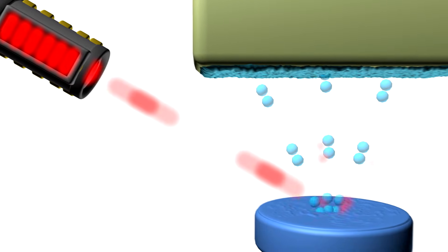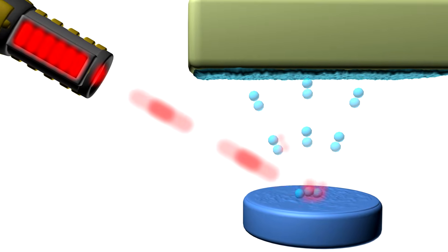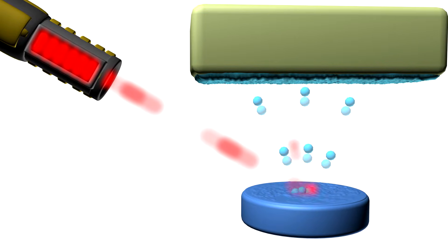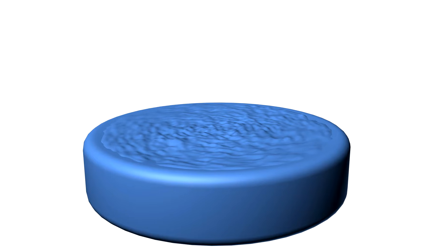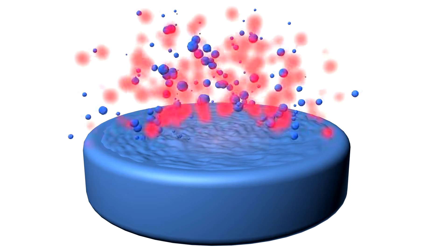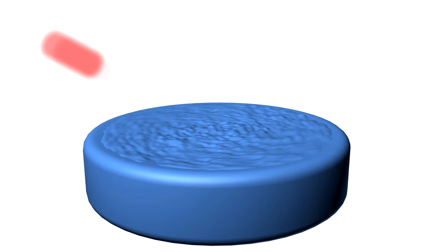This laser is aimed at the target material, where the beam interacts with the surface and creates a luminous plasma plume. The plume itself consists of atoms, molecules, ions and electrons. However, in some cases, larger particulates and molten globules of material can be ejected from the target during evaporation.